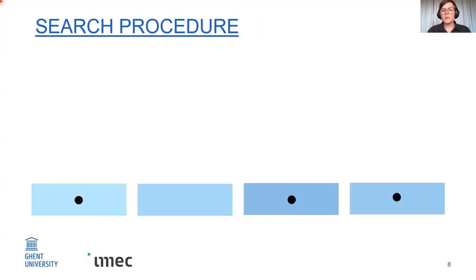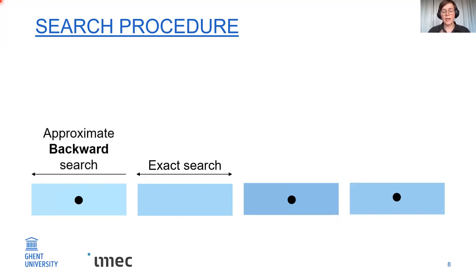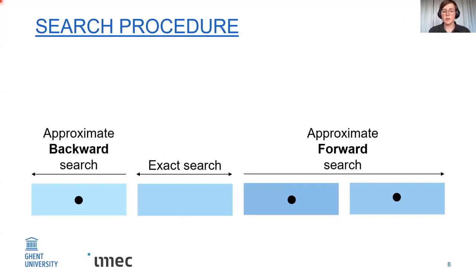For the search procedure, imagine we're looking for a specific error distribution. We start with an exact match of the error-free part, followed by an approximate backward search of the first part, and an approximate forward search of the final two parts. Since we don't know the error distribution beforehand, we repeat this for each part. This shows we need to switch between approximate backward and approximate forward searching.